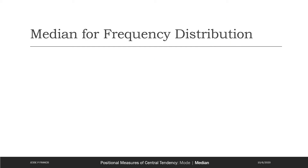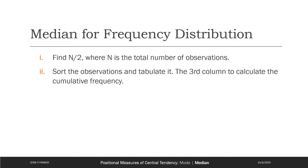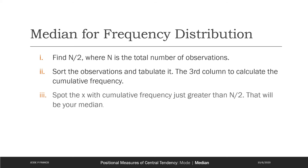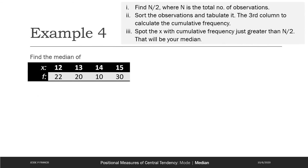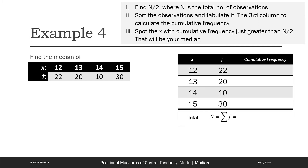Let's look at how to find the median of a frequency distribution. The first step is to find the total number of observations and then find n/2. Sort the observations and tabulate them. Add a third column to calculate something called cumulative frequency. The cumulative frequency of an observation xᵢ is the sum of frequencies up to that observation. We'll see that more clearly with an example. The next step is to spot the cumulative frequency just greater than n/2 — the corresponding value of x will be your median.